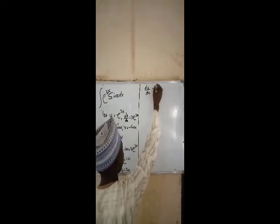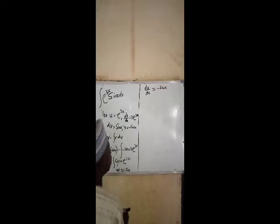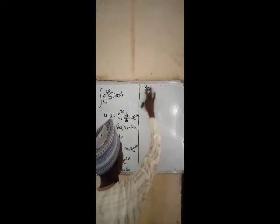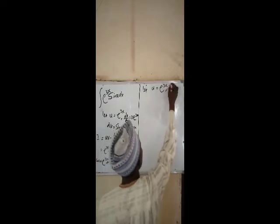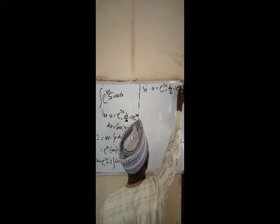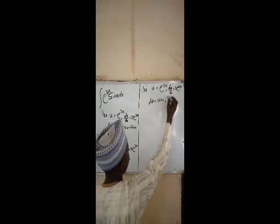Let u be equal to cos x. Then du/dx is minus sin x. Now let dv be equal to e to the power of 3x. Therefore v is equal to sin x.